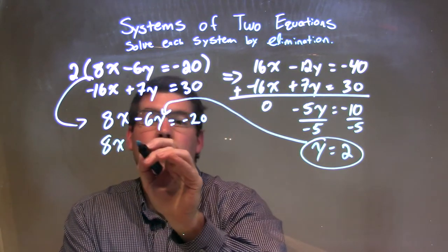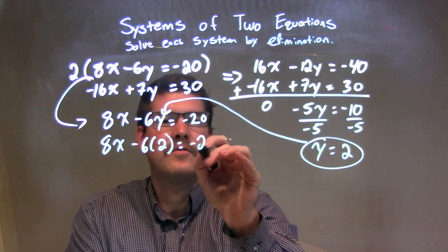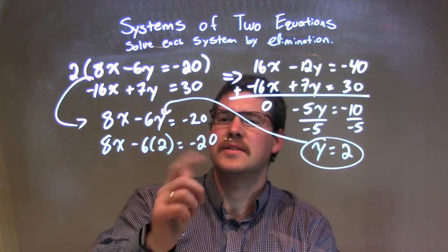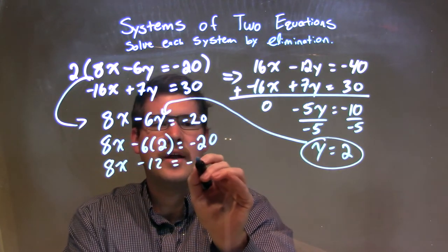So, I have 8x. I'll plug it in for y. 8x minus 6 times 2 equals negative 20. 6 times 2 is 12. So, we have 8x minus 12 here equals negative 20.